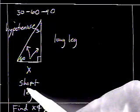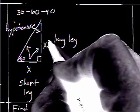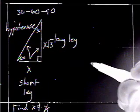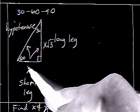To go from the short leg to the long leg, you need to multiply by radical 3. Likewise, if you were going backwards, you would divide by radical 3.